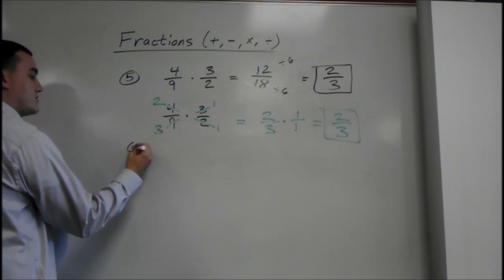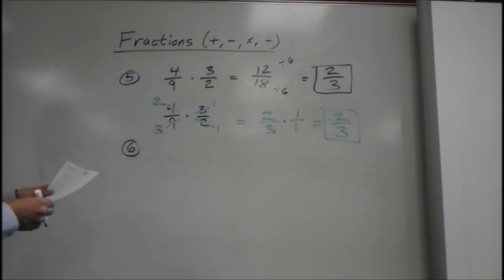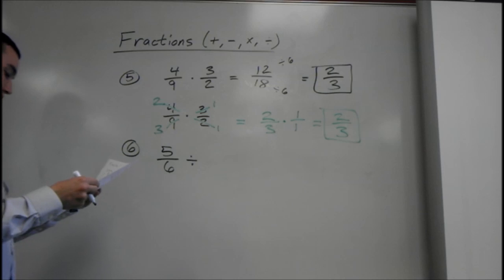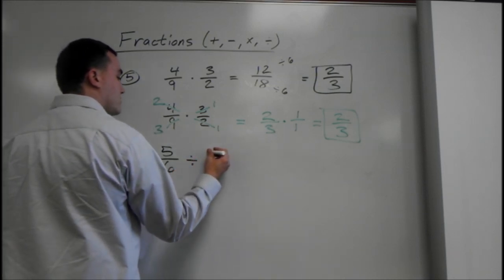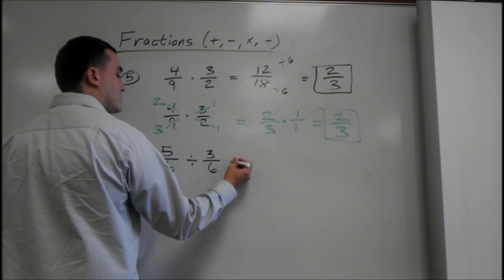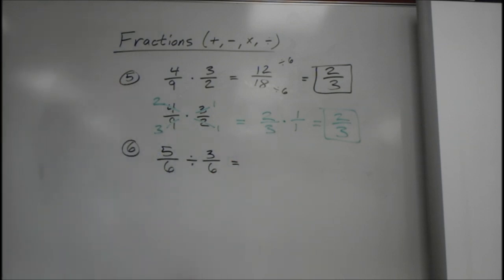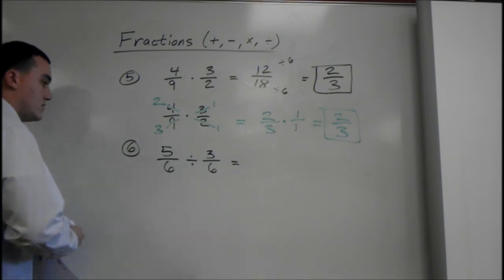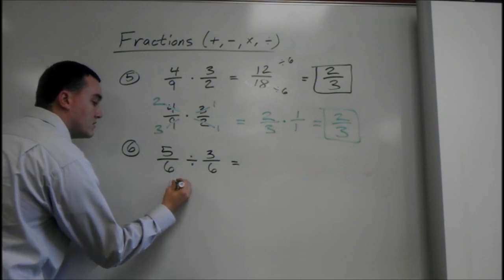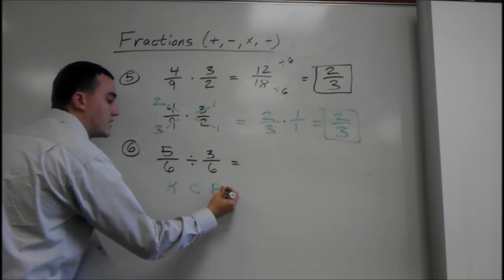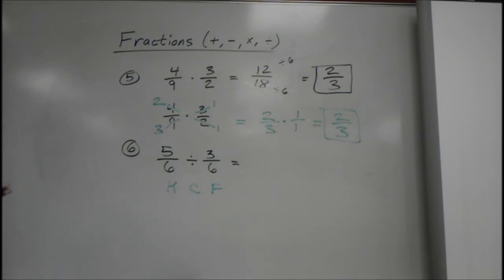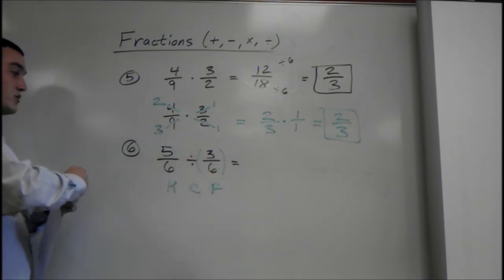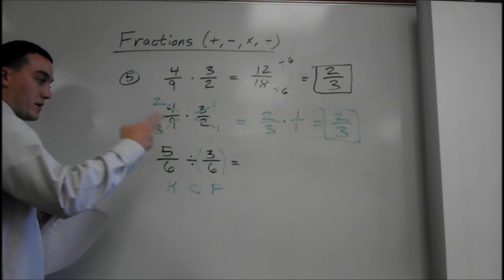And the last one, number 6. We have 5 over 6 divide by 3 over 6. Now, there's a trick when you're dividing. What they say is, you can keep the first, change the sign, and flip the last. Keep, change, flip. Alright? Another way to remember is, when you're dividing by a fraction, because here we have a fraction, you can multiply by the reciprocal. The reciprocal is just when you flip it.